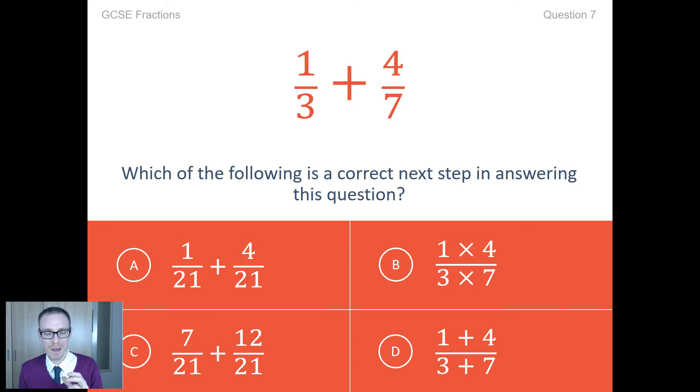So it's much better to strip it back and identify, can they get the first bit right? And then let's get that bit sorted. Now can they get the next bit right? So this question really does isolate. Do students have the knowledge to get the first step in the process right? So which of the following is a correct next step in answering the question? I'm a big, big fan of asking questions that way.